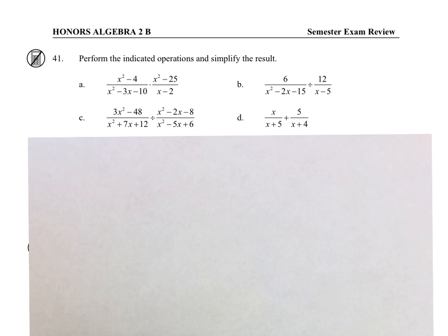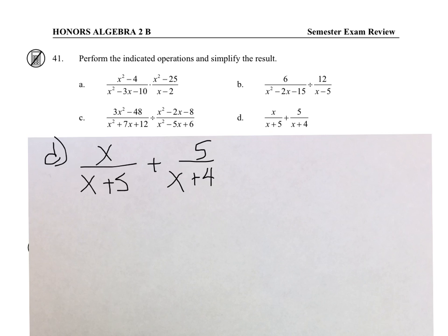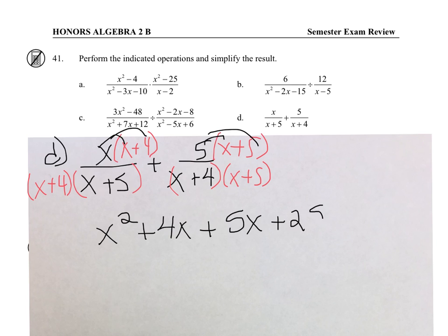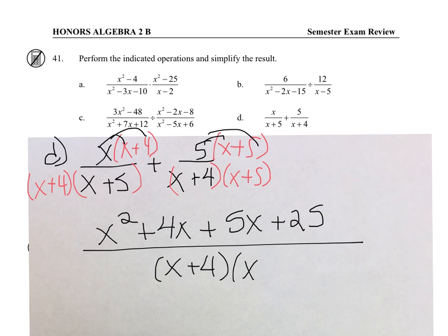Now for D, for adding we need a common denominator. Since each denominator is a binomial, our least common denominator is X plus 4 times X plus 5. Simplifying the numerator: X squared plus 4X plus 5X plus 25, divided by X plus 4 times X plus 5. Combining like terms gives 9X, and the numerator does not factor, so our final answer is X squared plus 9X plus 25, divided by X plus 4 times X plus 5.